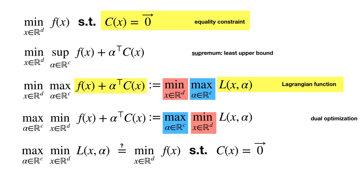If there's anything non-zero, you can multiply it by an arbitrarily large number and make the score really large. The question of when the dual equals the original problem is when you have tight duality. That's not so much a concern for this video — in some cases you want tight duality, in others you might have a duality gap but use the dual because it's more convenient to compute.